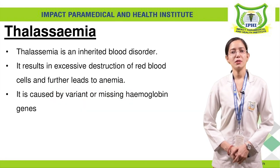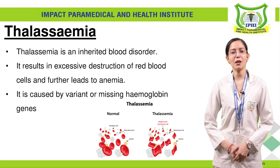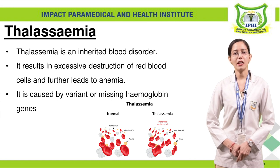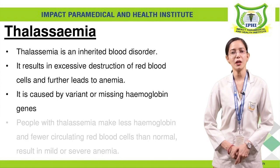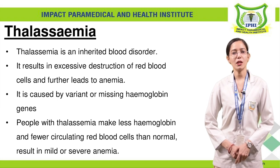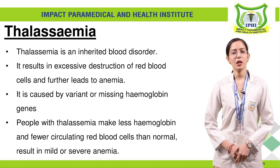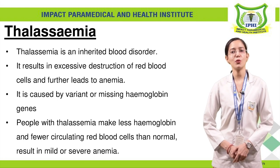Thalassemia is caused by a variant or missing hemoglobin genes. Hemoglobin is made of iron and globin — globin is a protein which consists of different polypeptide chains like alpha, beta, gamma, and delta genes. If any hemoglobin gene is missing or has changes, we can get thalassemia. People with thalassemia make less hemoglobin and fewer circulating red blood cells than normal, resulting in mild or severe anemia.